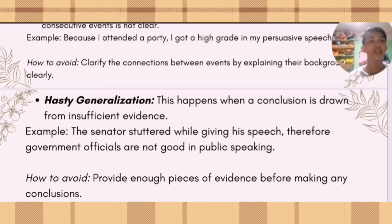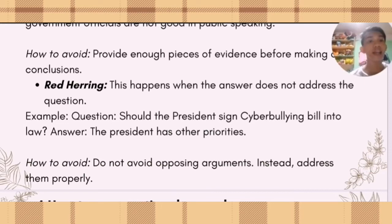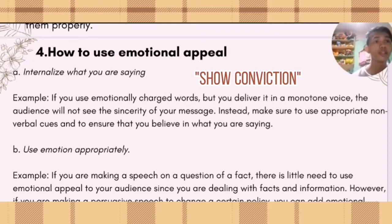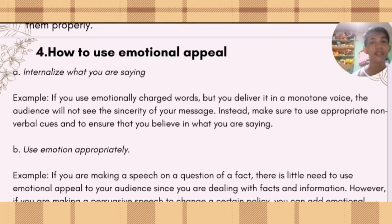Red herring happens when the answer does not address the question. To avoid red herring, do not avoid opposing arguments — address them properly instead. How to use emotional appeal: first, internalize what you are saying. The audience will be more convinced of your message if you show conviction in what you are saying. Second, use emotion appropriately. Although a well-executed emotional appeal can be a strong weapon in persuasive speech, take note to use it only when appropriate to the message.